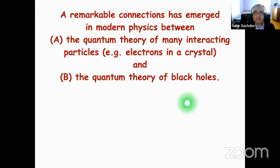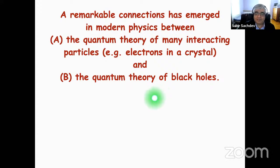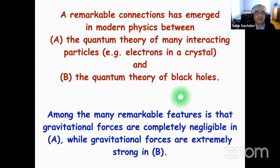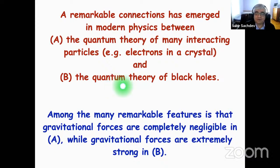More firmly stated: a remarkable connection has emerged in modern physics between the quantum theory of many interacting particles — electrons in various materials and crystals, especially the ones that were discovered in the 1980s — and, remarkably, a completely unrelated problem: the quantum theory of black holes. So why would this connection be so astonishing? Well, when we are studying electrons moving in a crystal, we just worry about the electrical forces between them. The gravitational forces are completely negligible. On the other hand, a black hole is precisely where gravity is so strong that even light can't escape — a regime of extremely strong gravity. And amazingly, there's a connection between these two problems with very weak and extremely strong gravity.